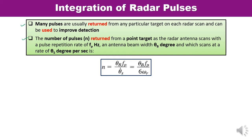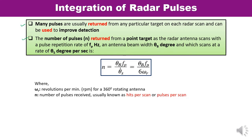Alternatively, N can be calculated as N equals theta-b times fp divided by 6 times omega-r, where omega-r is the revolution per minute — for a 360-degree rotating antenna. N is the total number of pulses returned from a point target, and it is also known as hits per scan or pulses per scan.